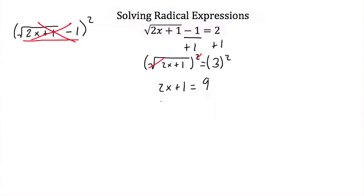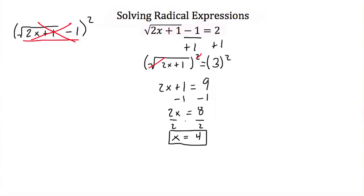So we have 2x plus 1 is equal to 9. Subtracting 1 from each side gives 2x is equal to 8, then dividing both sides by 2 gives x is equal to 4. We found our solution, but since we squared both sides earlier, we always have to go back and check.